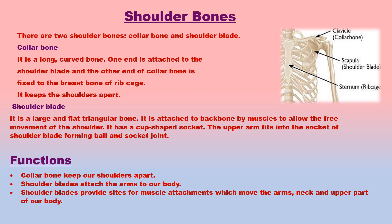Shoulders are the part of the body to which our arms are attached. There are two shoulder bones: collar bone and shoulder blade. The collar bone is a long, curved bone — one end is attached to the shoulder blade and the other end is fixed to the breast bone of the rib cage for support. The shoulder blade is a large, flat triangular bone attached to the backbone by muscles to allow free movement. Each shoulder blade has a cup-shaped socket into which the upper arm fits, forming a ball and socket joint.